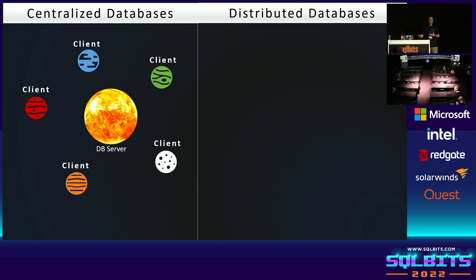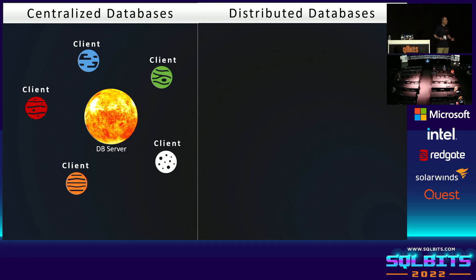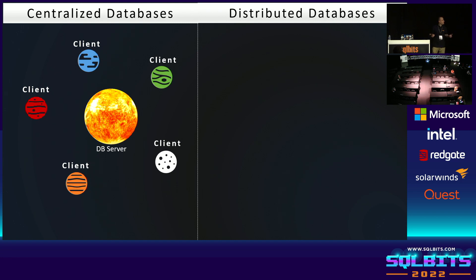To understand that, let's compare the centralized database — a relational database — to a distributed database like Cosmos DB. In a centralized database, clients such as reports or web applications pull data, and the client doesn't need to worry about where the database is, because it has the connection string. The database's job is to pull the data. In this conference, most sessions discuss how to get data faster by creating indexes and partitioning.